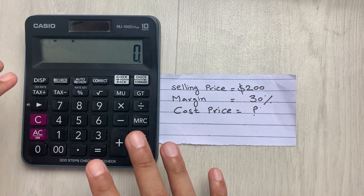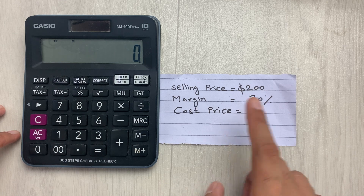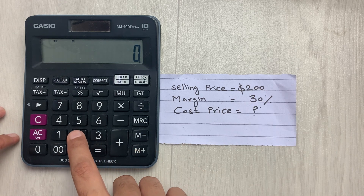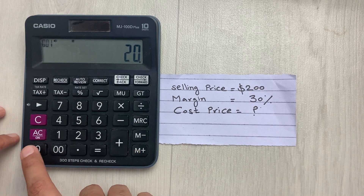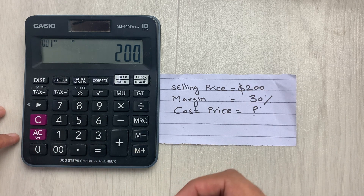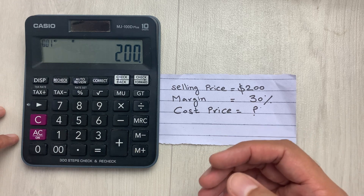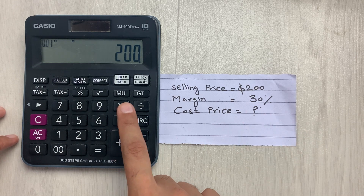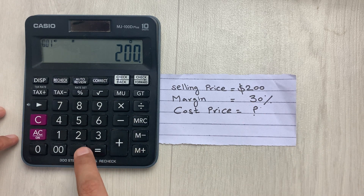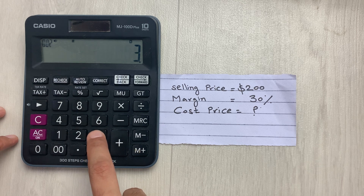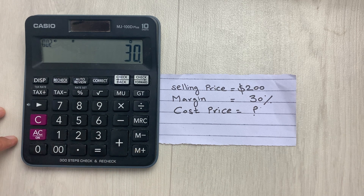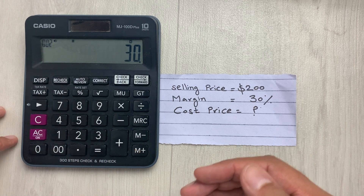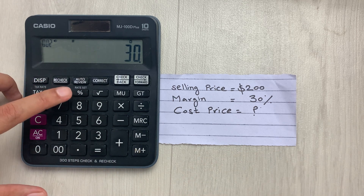First of all on your calculator, you have to type 200. Then in the second step, you have to multiply it with 30. I will press this multiply button and then type 30. And then in the next step, you have to press this percentage button.